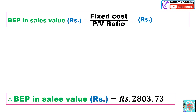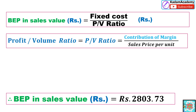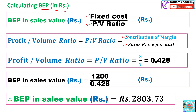Next, BEP in rupees. The answer is 2,803.73 rupees. The formula is: Fixed Costs / PV Ratio, where PV ratio (Profit Volume ratio) = Contribution Margin / Sales Price per Unit = 3 / 7 = 0.428. Therefore, BEP in rupees = Fixed Cost / PV Ratio = 1,200 / 0.428 = 2,803.73 rupees. This is the simple way to calculate BEP in sales value and BEP in units.